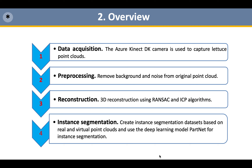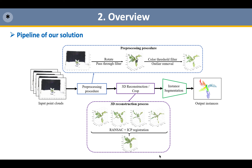Our method is shown in the figure. Firstly, we used the Azure Kinect DK camera to capture plants into a 3D point cloud and preprocessed the raw data. Secondly, we conducted research on an automatic registration algorithm to complete lettuce reconstruction. An instance segmentation dataset was made based on real and virtual point clouds, and instance segmentation was performed based on the recursive neural network PARNet. We proposed the instance segmentation pipeline of lettuce point clouds, as shown in the figure.